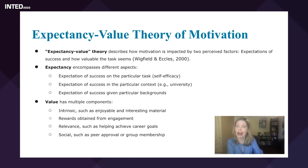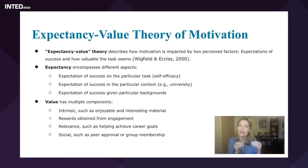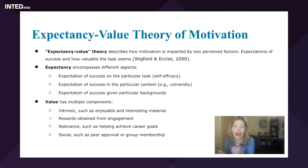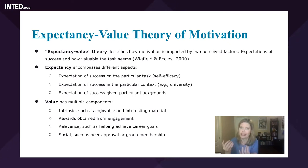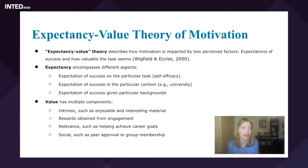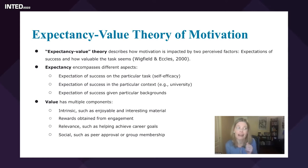When we think about expectancy of success there are different pieces. You can think about your expectancy on a particular task — how likely am I to be successful in math, for example. You can think about expectation of success in a particular context, such as how ready am I to do university-level work. And thinking about students who come from different demographic communities — different groups will have different expectations of success. All of those things can play a role in expectation of success.